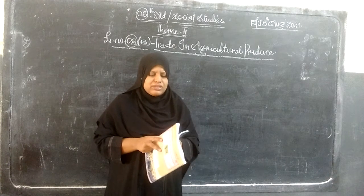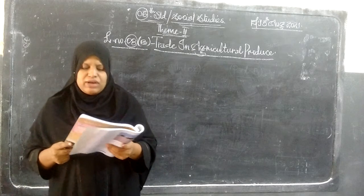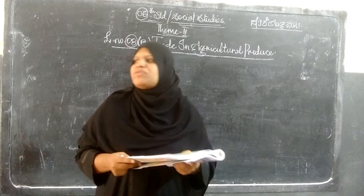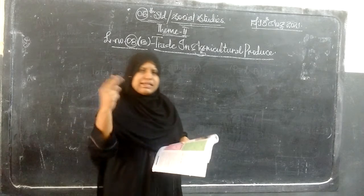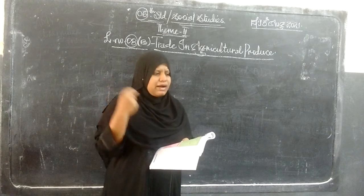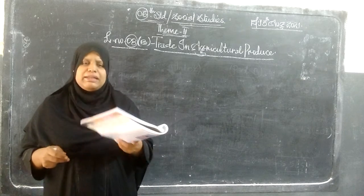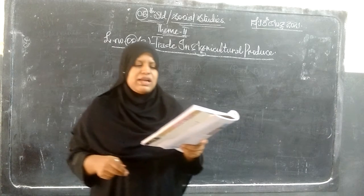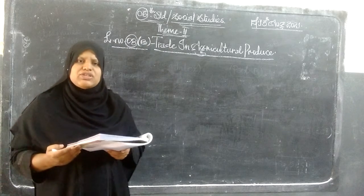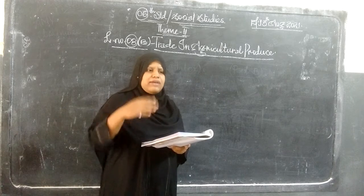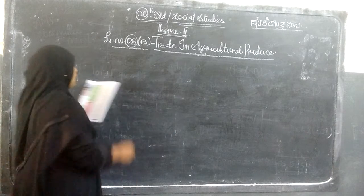Now we will look at a second example — selling to a rice miller. Instead of going to the agricultural market and getting the minimum support price, here the farmer goes to sell to a rice miller. Let's see how this happens, and why the farmer chooses to sell to a rice miller rather than going to the agricultural market.